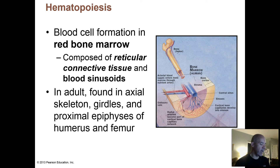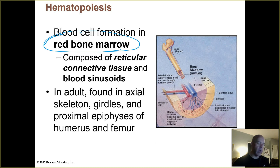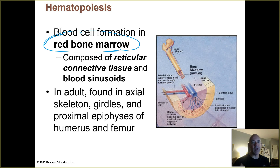You guys should have learned in Biology 201 that blood cell formation actually takes place in the red bone marrow. You have red bone marrow and yellow bone marrow. When you're first born, you have a lot more red bone marrow than you do once you become an adult. Once you reach adulthood and continue to age, quite a bit of your red bone marrow winds up getting replaced with yellow, and the yellow bone marrow is essentially adipose tissue.